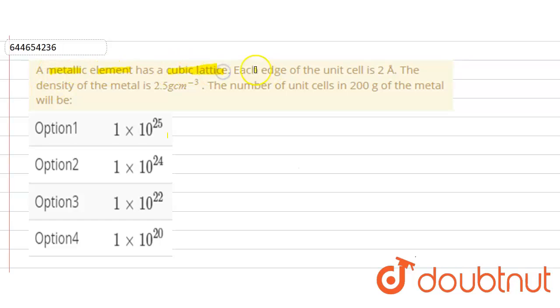has a cubic lattice. Each edge of the unit cell is 2 angstrom. The density of the metal is 2.5 gram per centimeter cube. We have given: the number of unit cells in 200 gram of metal will be. So we have given these options.